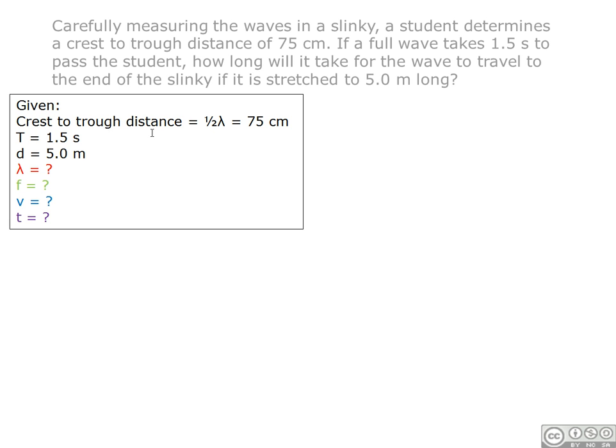We are given a crest to trough distance or a half wavelength distance of 75 cm, a period of 1.5 seconds, and a distance traveled of 5.0 m. What we need to find is the full wavelength distance, the frequency, the speed of the wave, and then the time it will take for the wave to reach the end of the slinky.